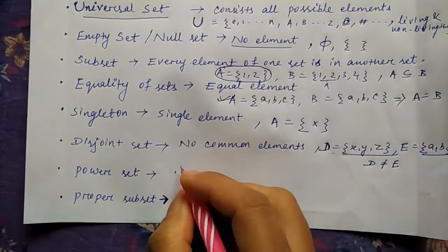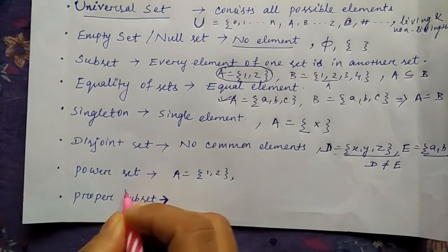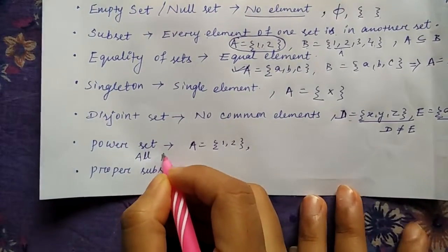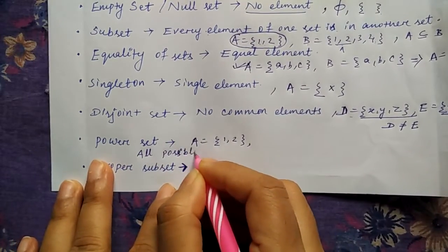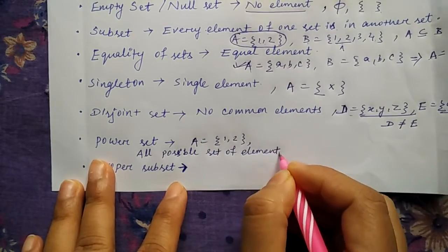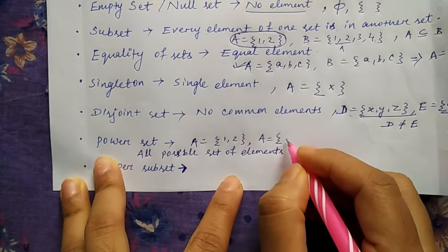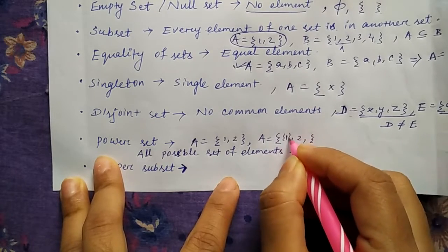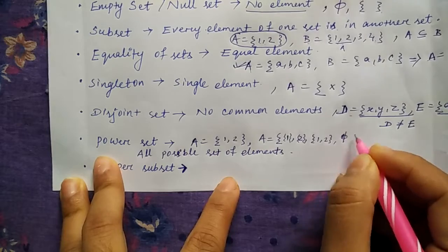Then power set. Power set is if you are taking a set having one or two elements, then power set will be the all possible set of elements.